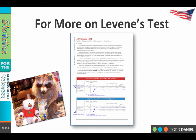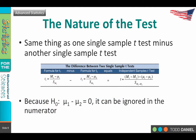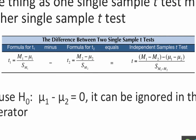You can find out more about Levene's test on page 12 of the Bayer handout. Now let's look at what a single-sample t-test looks like. It's the mean of the sample minus the mean of the population, divided by the estimated standard deviation of the population — that s sub m.